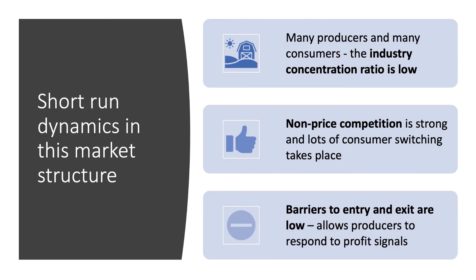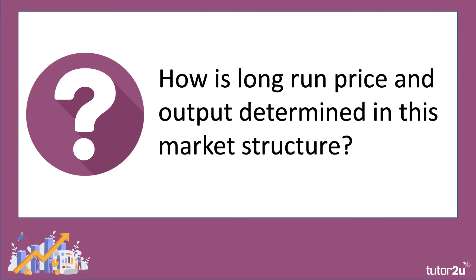If returns in this market are at least as good as the next-best alternative, that's normal profit — and normal profit is included in average cost. So breaking even means making normal profit; doing better than that is called abnormal or supernormal profit. Key features of this market structure: many firms and consumers means the concentration ratio tends to be low. Non-price competition is really important. Crucially, barriers to entry and exit are low, so there are no significant expensive barriers to entering the market.